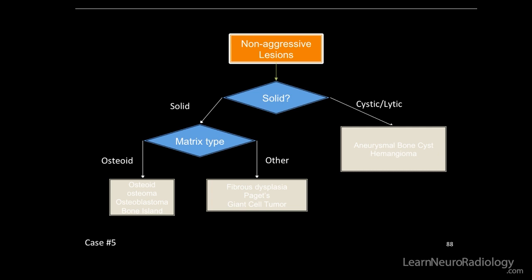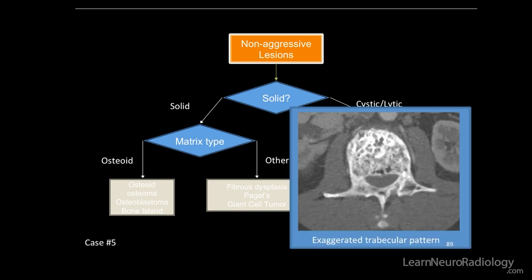Any matrix type to this one? Not really — more of an exaggerated trabecular pattern. It doesn't have a fluffy osteoid matrix or a ring-and-arc type matrix.